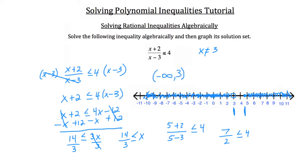So your graph should look something like this. In interval notation, the right region is written as bracket 14/3 comma infinity parenthesis — bracket because we include 14/3, and parenthesis because you can't define infinity, so that endpoint is not included.